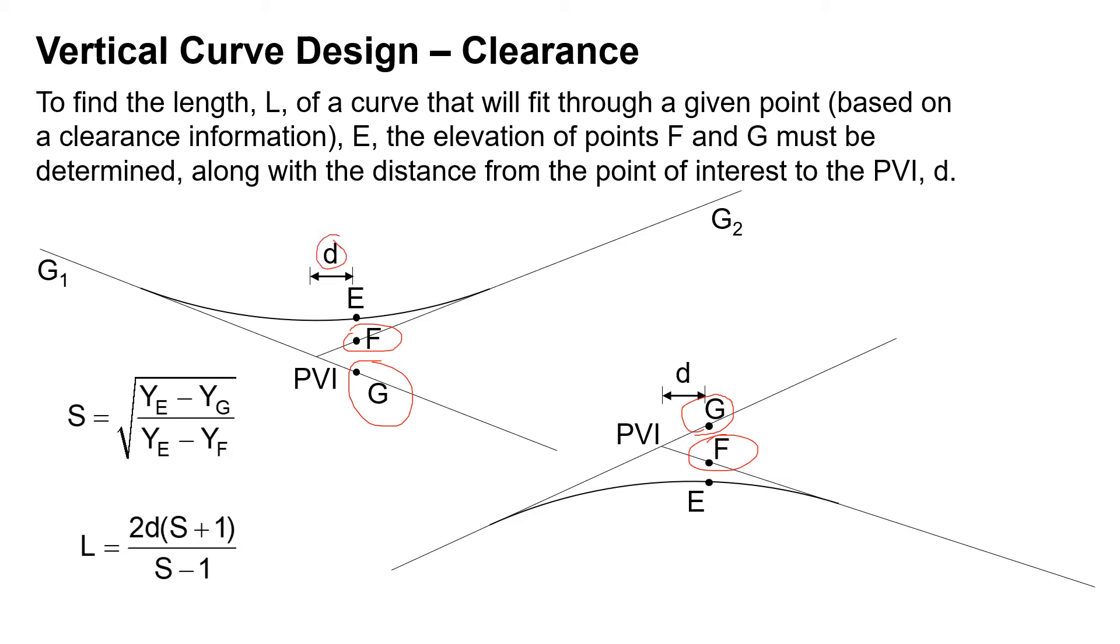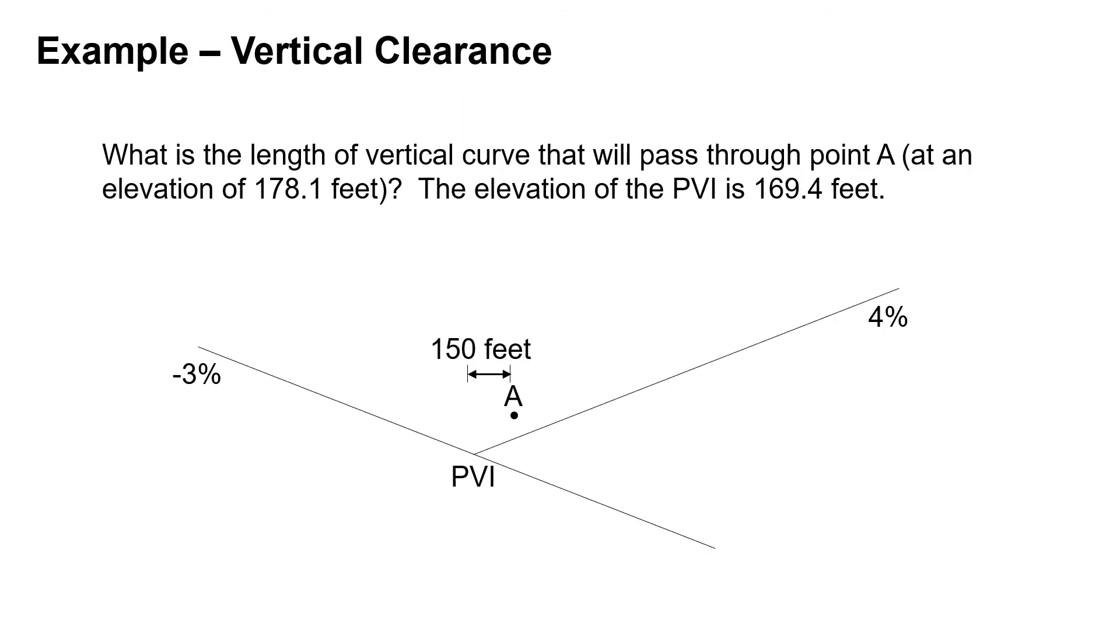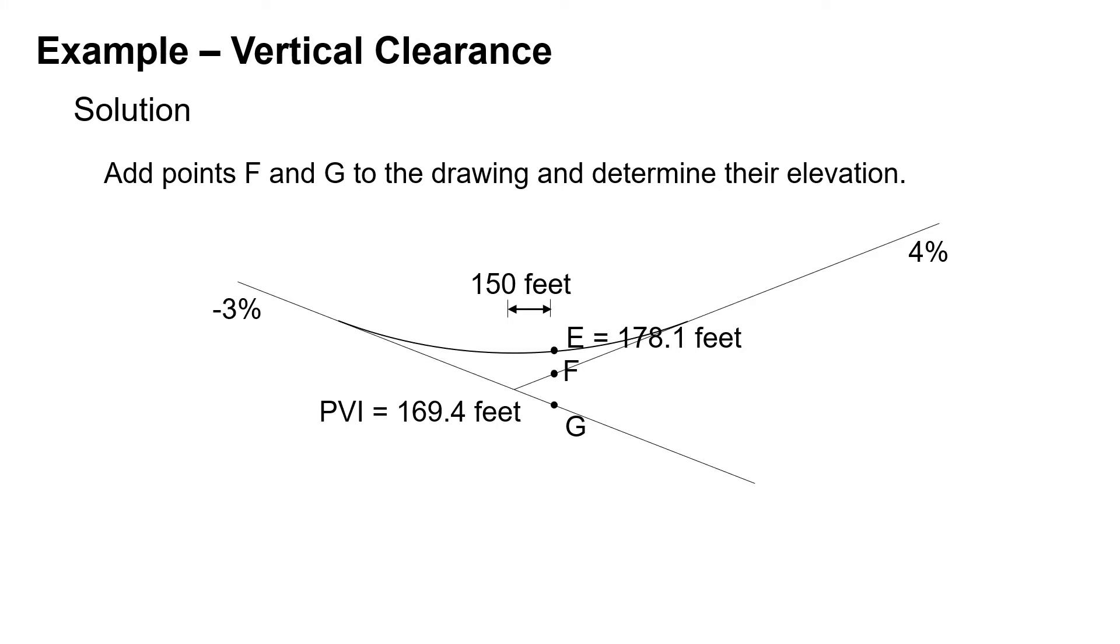Working through an example: what's the length of a vertical curve that will pass through point A at an elevation of 178.1 feet, and the elevation of the PVI is given as 169.4 feet? A simple drawing again to help us locate everything. The PVI elevation is 169.4 feet, our point of interest is 150 feet from the PVI, and the point elevation we need to meet is 178.1 feet.